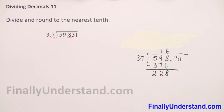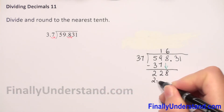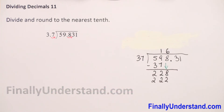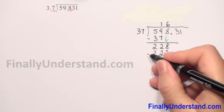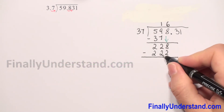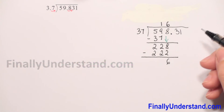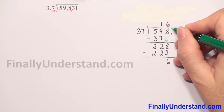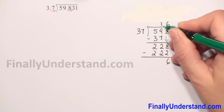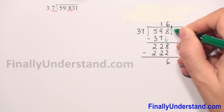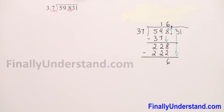Now we do the multiplication: 6 times 37 is 222. Then we do subtraction: 8 minus 2 is 6, 2 minus 2 is 0. Next, we take the decimal point up to our solution, writing it exactly in the same column at the top, and take down the next digit.